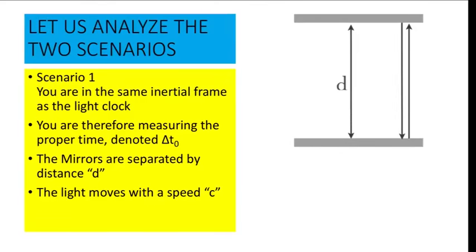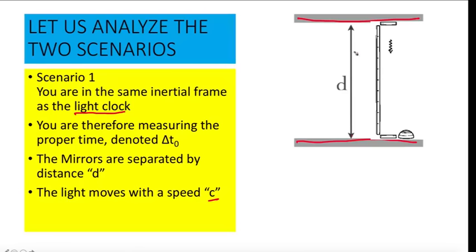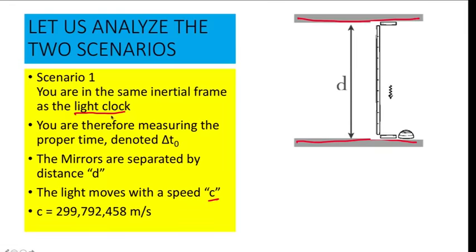In order to derive the formula, let's consider two scenarios. In the first scenario, we have a light clock — a clock that measures time by bouncing a light ray back and forth between two parallel mirrors. We bounce this light ray, and since light has a constant speed denoted by c, bouncing it back and forth allows us to create a ticking clock that measures time. In this first scenario, we are in the same inertial frame as the light clock — when we move, the clock moves with us. We use the notation delta t sub 0 to denote proper time, the time measured when you are in the same inertial frame. The distance between the two mirrors is denoted by d.